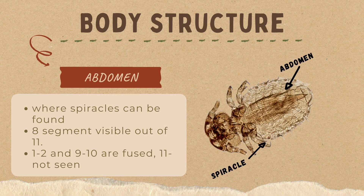For the abdomen, it is where spiracles can be found. They have eleven segments, but only eight are visible. The first and second segments are fused, as well as the ninth and tenth. The eleventh segment is not seen.